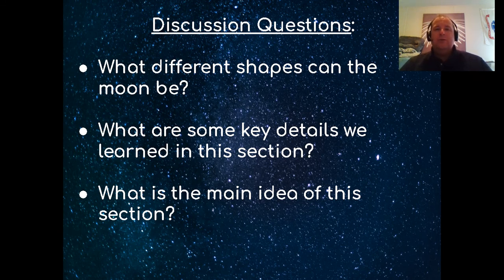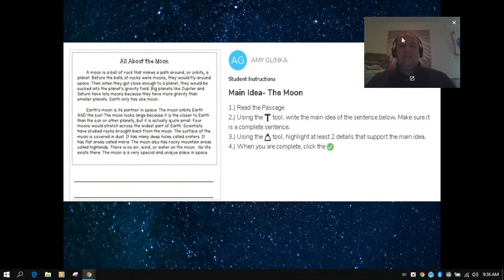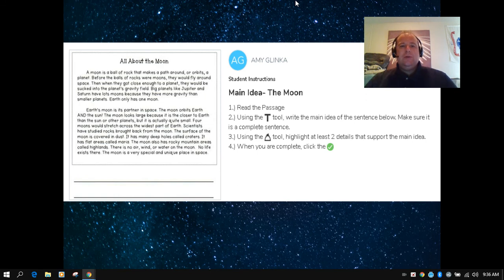Remember, you can always go back and review this video and the text to help support your answers. In your assignment today, third graders, it's all about the moon. You need to read these two paragraphs, this short little article, and then using the writing tool, write the main idea of the sentence below. Remember from our anchor chart to find the main idea. Sometimes you look for repeated words, maybe look at the title of the passage or the article, maybe look at the first and last sentence, maybe look for words that are repeated. And then after you determine what the main idea is, use the highlighting tool right here to highlight at least two details that help support what you think the main idea of this passage is all about the moon. When you are complete, click that check mark so your teacher can view it and be ready to share at class time.